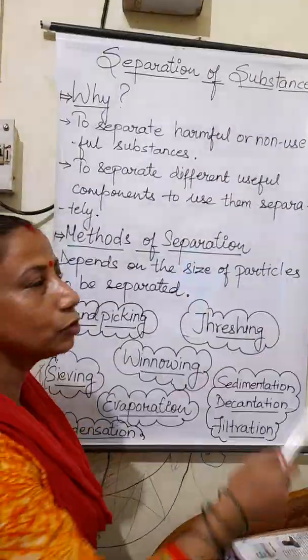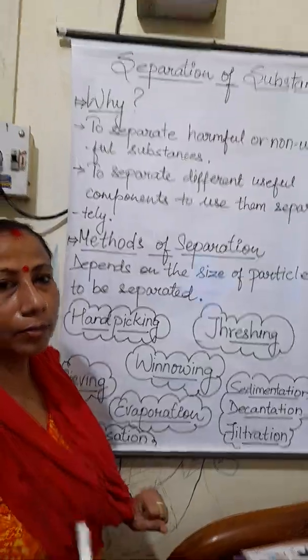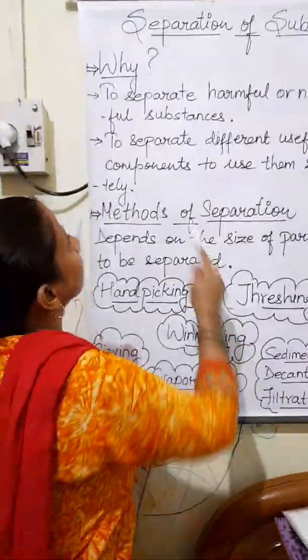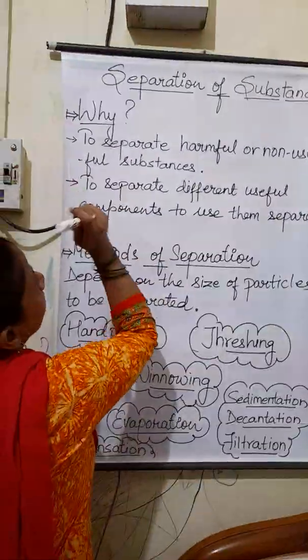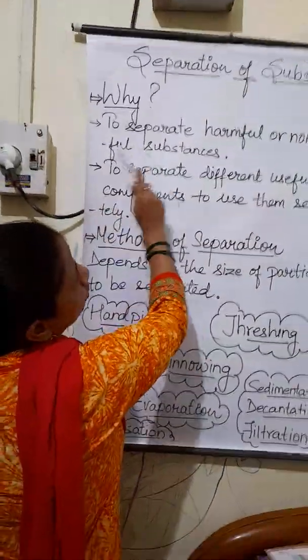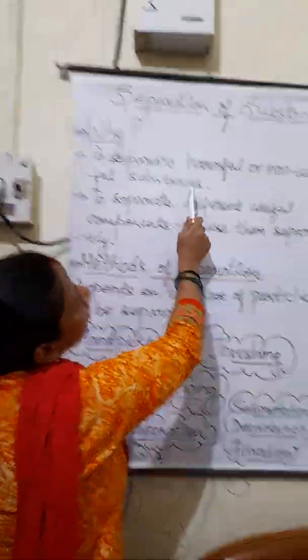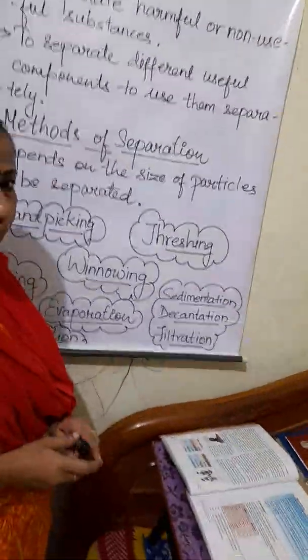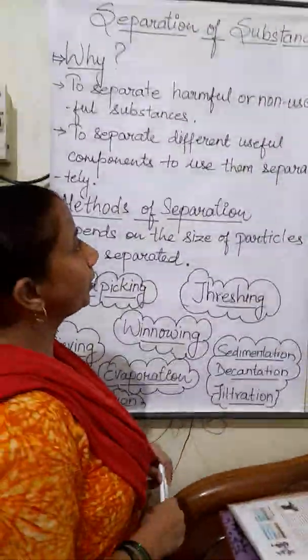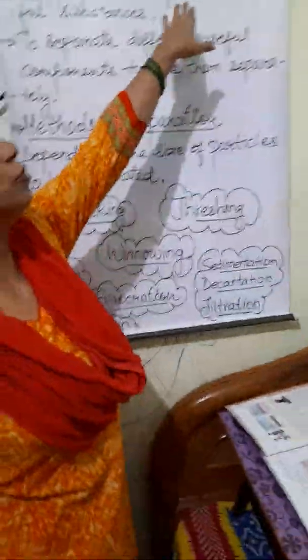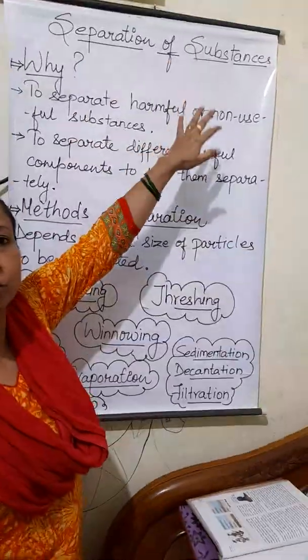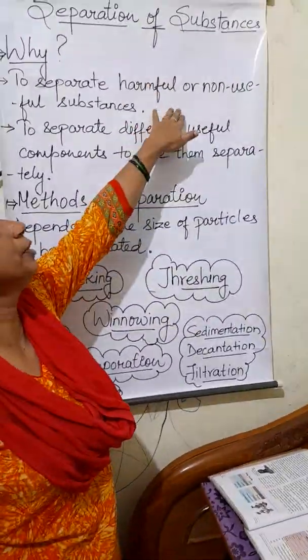So first I will give you the answer — why we are separating one thing from another. The first reason is to separate harmful or non-useful substances. Suppose we are separating anything — it means some harmful substances are also mixed with it, and we don't have to use them, so we have to remove them.